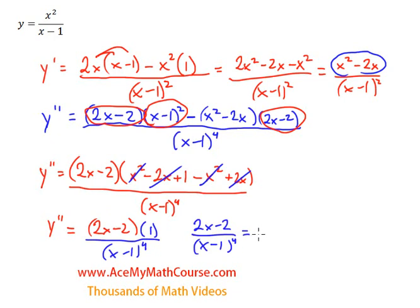We want to set the double derivative equal to 0. We'll cross multiply. So we end up with just 2x minus 2. Bring the 2 over. So I get 2x equals 2, x equals 1. But note one thing.